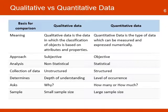The principal difference is that qualitative data is the data in which the classification of objects is based on attributes and properties. It is subjective and structured and requires a small sample. On the other hand, quantitative data is the type of data which can be measured and expressed numerically. It is objective, structured, and requires a large sample.